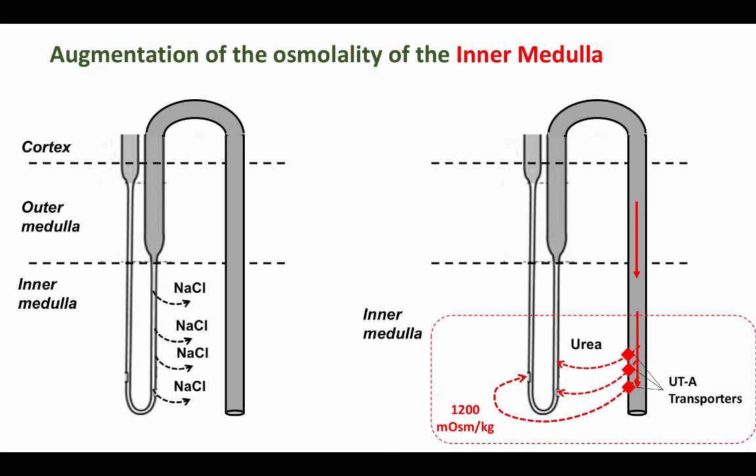Urea can then diffuse passively out of the collecting duct and recycle back into the ascending loop of Henle, which is passively permeable to urea. While urea is recycling, it becomes trapped in the inner medulla and augments the osmolality of the interstitium greatly, increasing the ability of the nephron to concentrate urine.